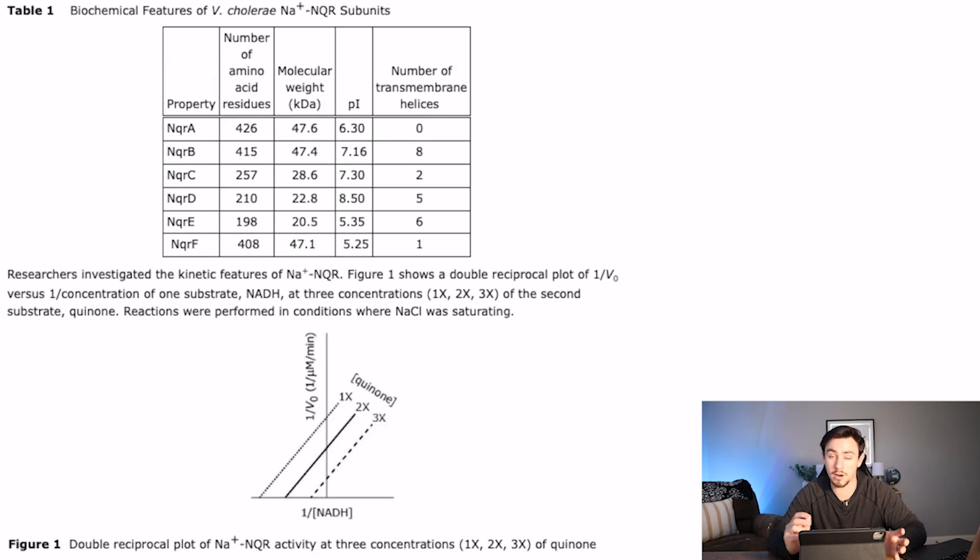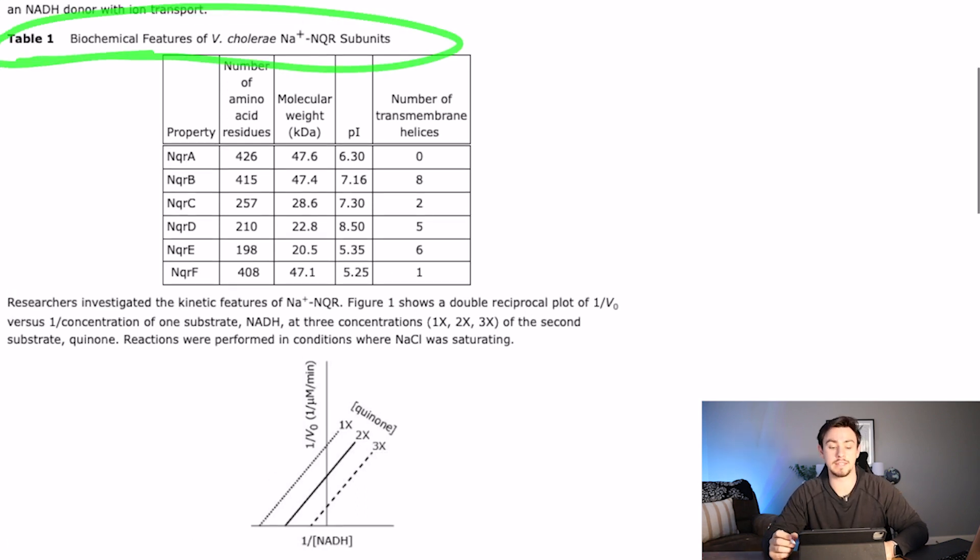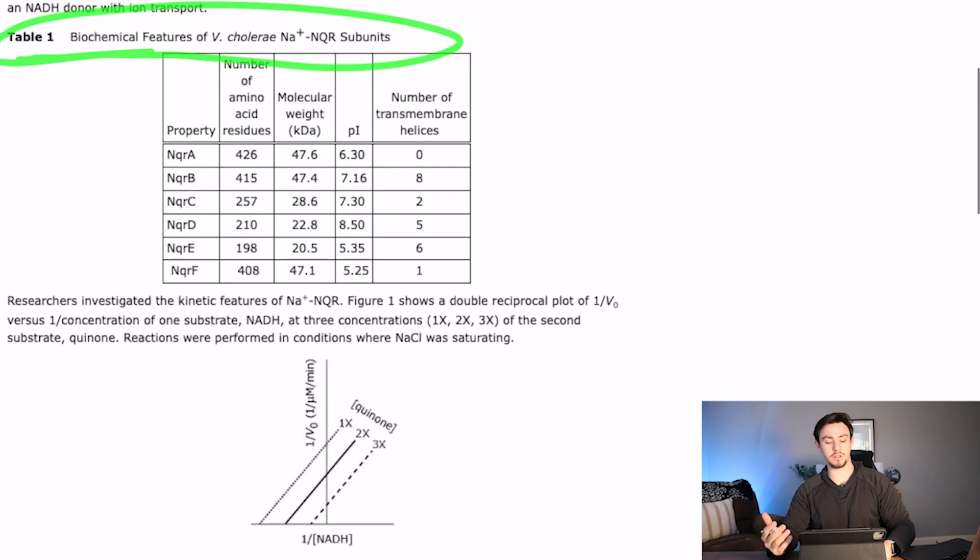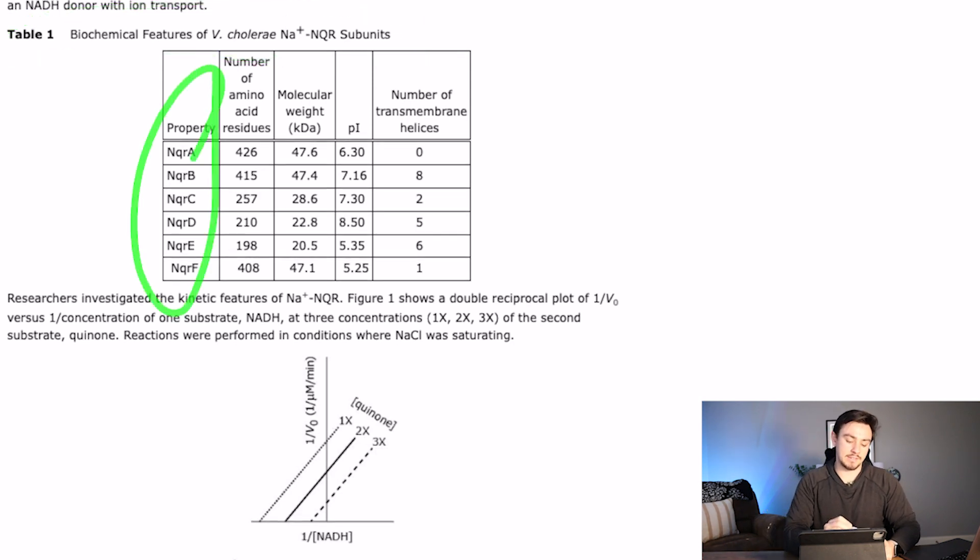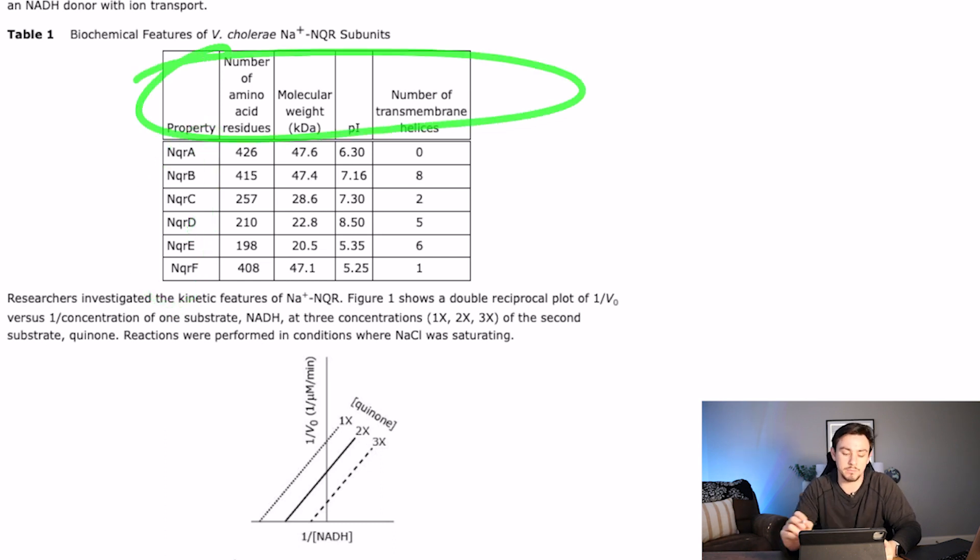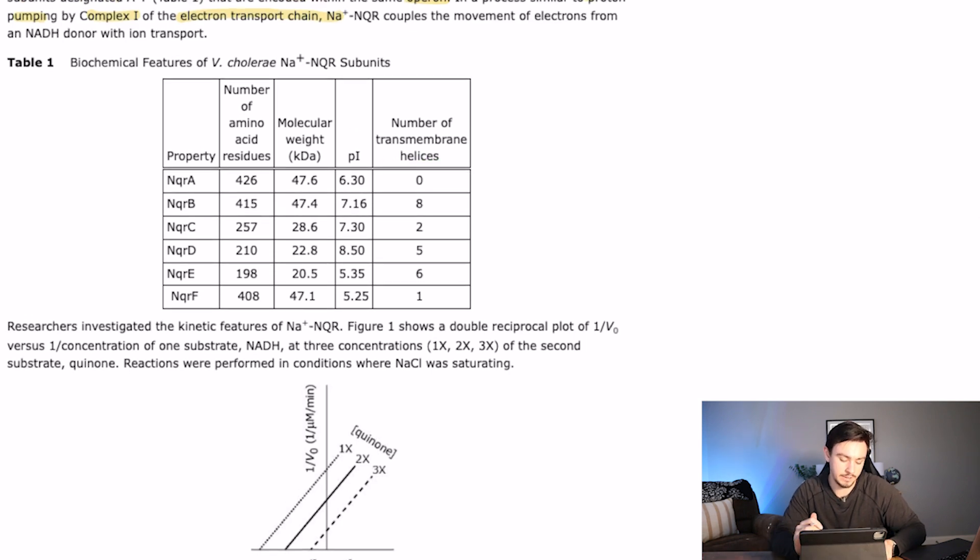So then we go on to table one. Remember how we read tables? We don't. We just read this. We read the caption, which is the biochemical features of cholera, sodium, and NQR subunits. And then we read the axes. So we have property, and we have all these different subunits, and then we have some things about the subunits. So how many amino acid residues there are, their weight in Daltons or kilodaltons, their isoelectric point, and the number of helices. So there's a lot of different routes that could go here.